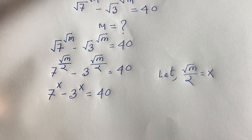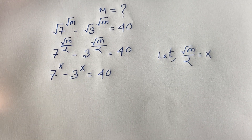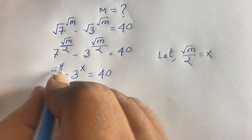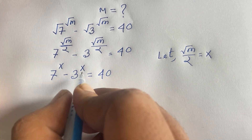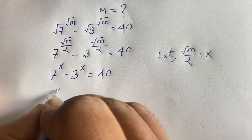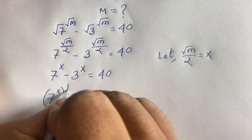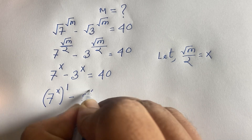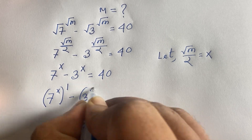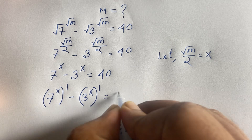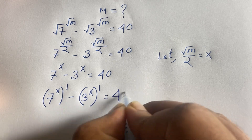We need to find the value of x in this exponential equation. Notice that 7^x and 3^x each have exponent 1, so we can rewrite each exponent as 2 over 2 — that is, 1 — to prepare for the next step.